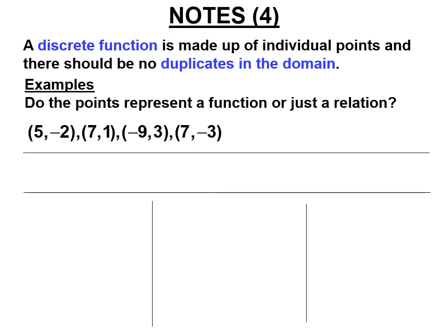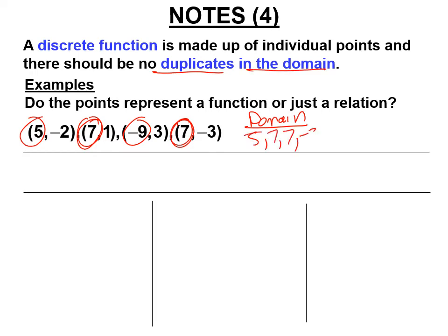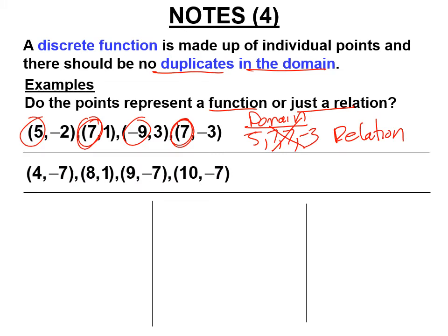There are different kinds of functions. A discrete function is just a bunch of points. A function — whether discrete or not — can have no duplicates in the domain, meaning the x-values. If a set of points has two 7s in the domain, those are duplicates, and it's a relation, not a function. If there are no duplicates in the domain, it is a discrete function.